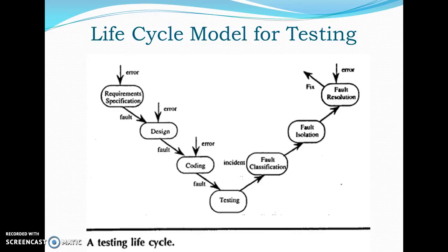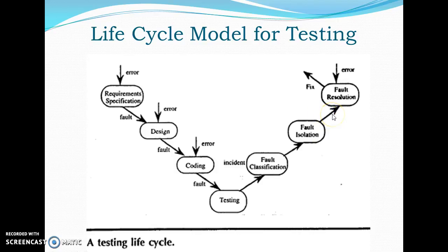We then look into the lifecycle model of testing. In the development phases, three opportunities arise for errors to be made, resulting in faults that propagate through the remainder of the development process. A tester summarizes this lifecycle as follows: the first three phases are the phases where the bugs are put in, the testing phase is where we find these bugs, and the last three phases are where we get the bugs out. The fault resolution step is another opportunity for errors and new faults. When a fix causes the previously correct software to misbehave, this fix is incomplete.